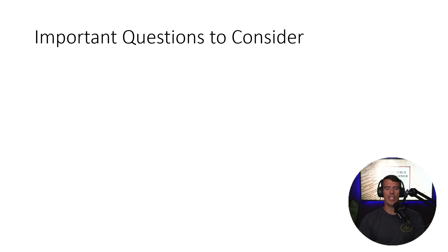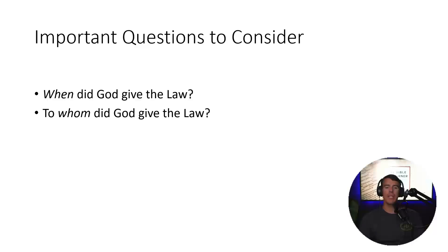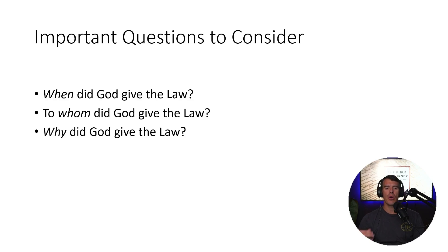When looking at the narrative of Scripture from Genesis onward, and looking at where God intersects with the storyline and gives the law to Israel, there are a couple of key questions to consider. First: when did God give the law? Second: to whom did God give the law? The recipient of the law is a very important part of this story. And third: why did God give the law? Those three questions — when, to whom, and why — really help us assess what's going on in the narrative.